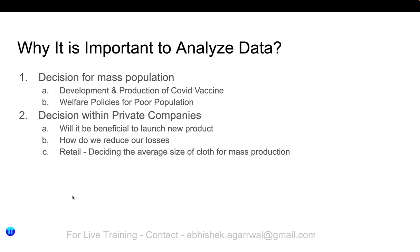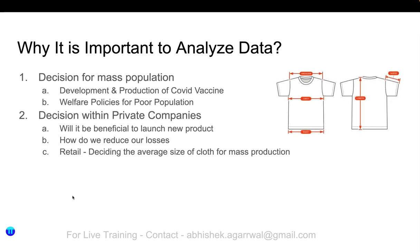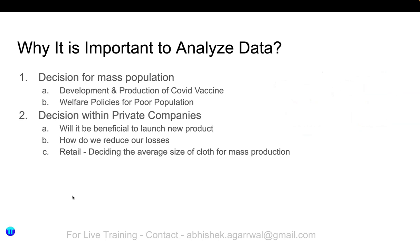A third example for private companies is retail: deciding the average size of clothes for mass production. Companies providing ready-made clothes manage to have sizes that fit 90 to 95 percent of the population. How? Purely through data analysis — they collect a large number of data points from various persons, divided between men and women, then decide the height, weight, and different parameters for mass production. Sizes like small, medium, large, and extra-large are all derived from this.